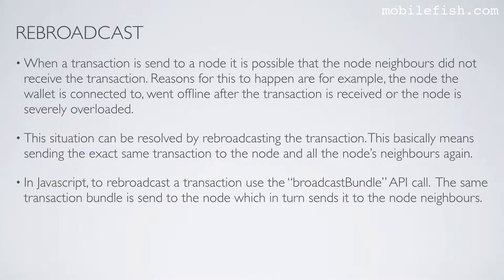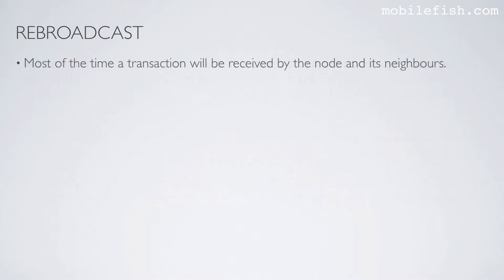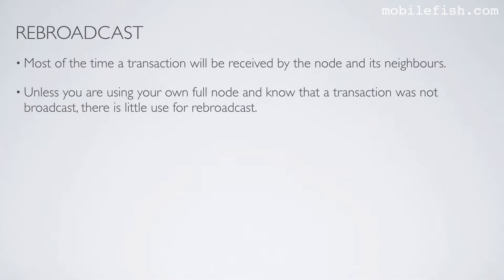In JavaScript, to rebroadcast a transaction use the broadcast bundle API call. The same transaction bundle is sent to the node which in turn sends it to the node neighbors. Most of the time a transaction will be received by the node and its neighbors, so unless you are using your own full node and know that the transaction was not broadcast, there is little use for rebroadcast.